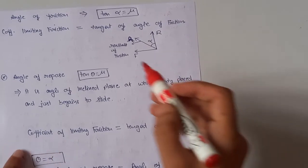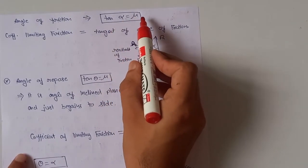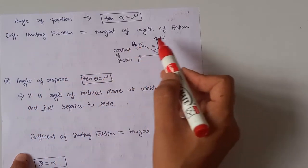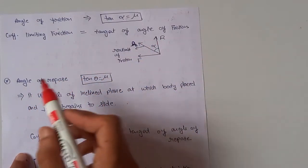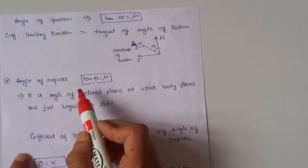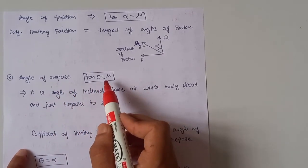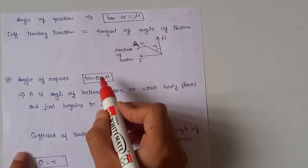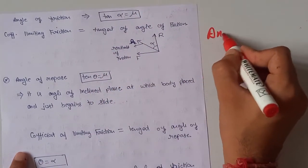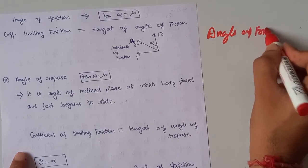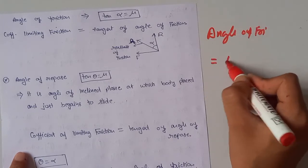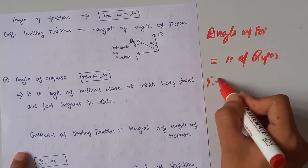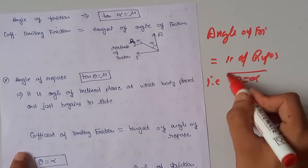Our next key point: the angle of friction. It is given by tan α = μ, meaning the coefficient of friction equals the tangent of the angle of friction. Importantly, the angle of friction is equal to the angle of repose, i.e., θ = α.